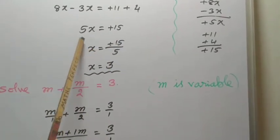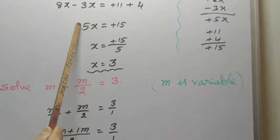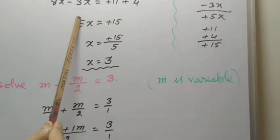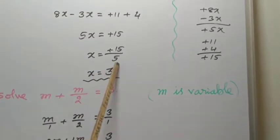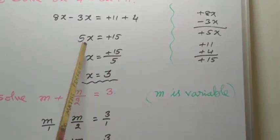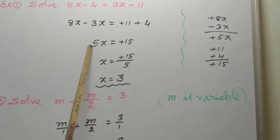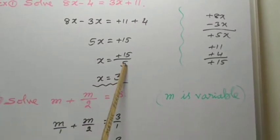Now, X equal to, means this coefficient, this is not the term, this is coefficient, 5. Transfer this to, that means cross-multiply this 5 to downside. This numerator comes to denominator.